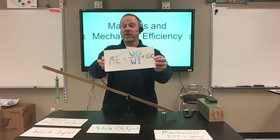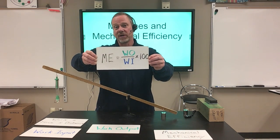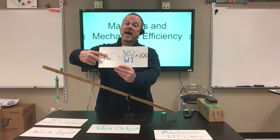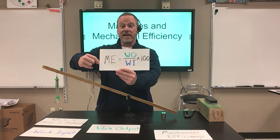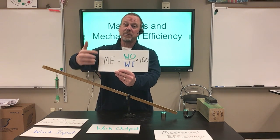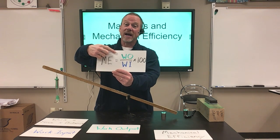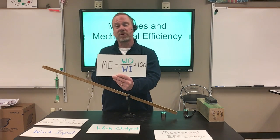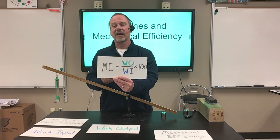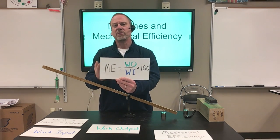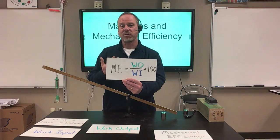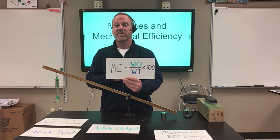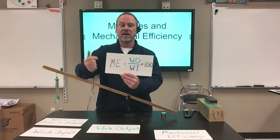Here's another formula you're going to see especially tomorrow when we do a worksheet with calculations. Mechanical efficiency is abbreviated ME, and it is calculated by taking WO — work output — and dividing it by WI — work input — and then we multiply that by 100, because we express mechanical efficiency as a percent. We might say something like 'this machine is 80 percent efficient' or 'this machine is 50 percent efficient.' ME equals WO over WI times 100.